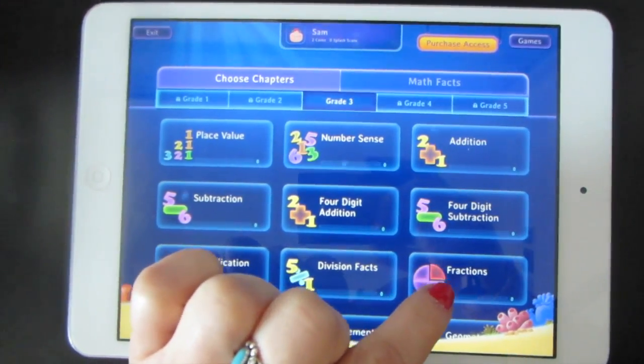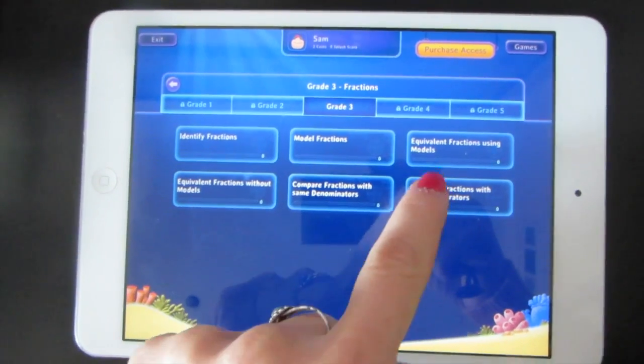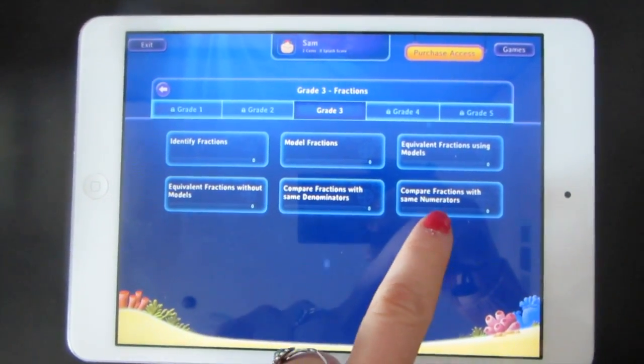Look for the box that says fractions. The ones you'll want to play are these four lessons: 1, 2, 3, and 4.